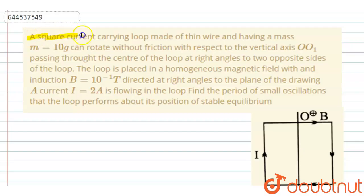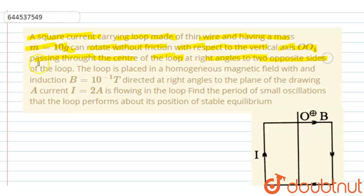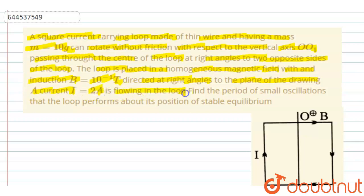The given question: a square current-carrying loop made of thin wire and having a mass m = 10 grams can rotate without friction with respect to the vertical axis OO1 passing throughout the center of the loop at right angles to two opposite sides of the loop. The loop is placed in a homogeneous magnetic field with field induction B = 10⁻¹ tesla directed at right angles to the plane of the drawing. Current i = 2 amperes is flowing in the loop. Find the period of small oscillations that the loop performs about its position of stable equilibrium.